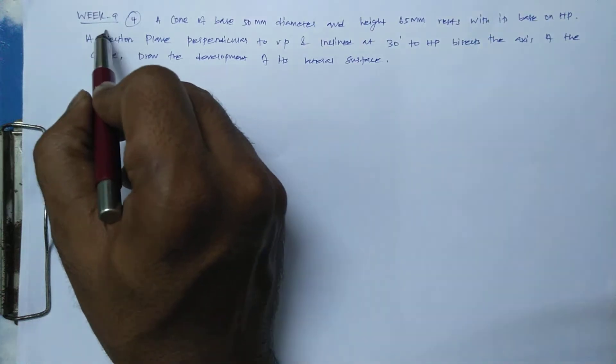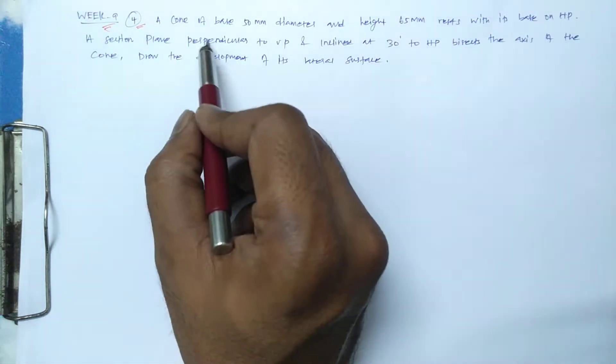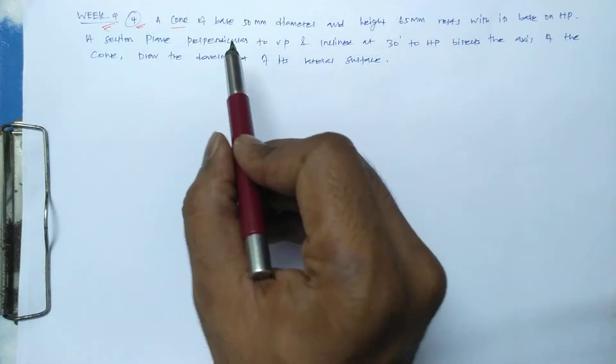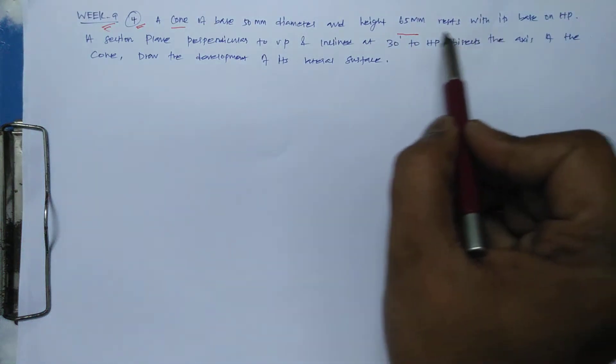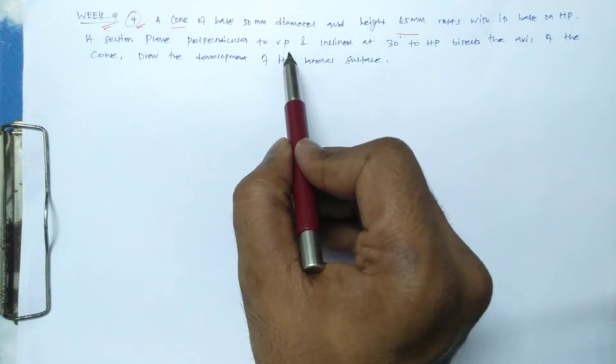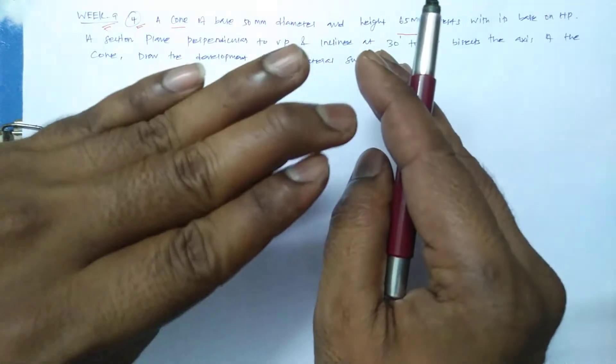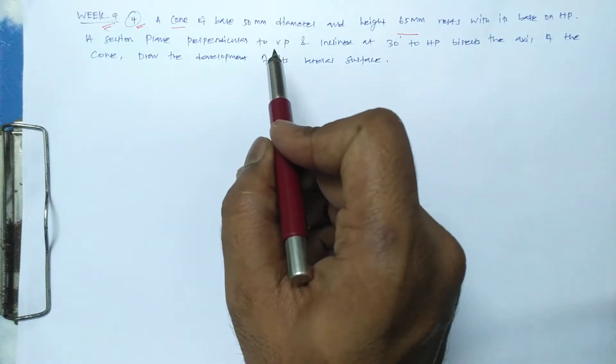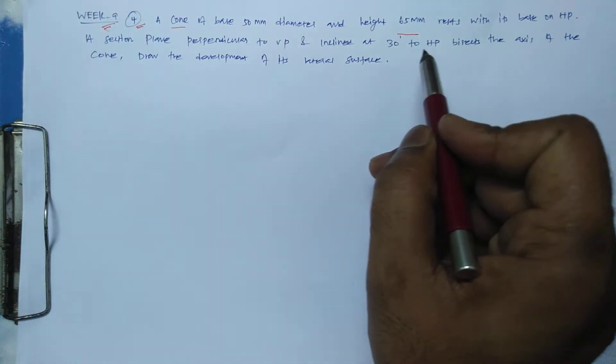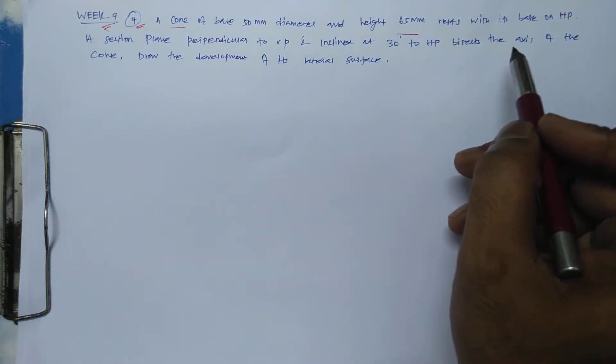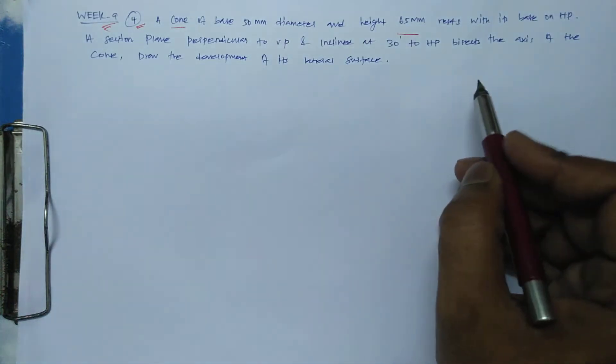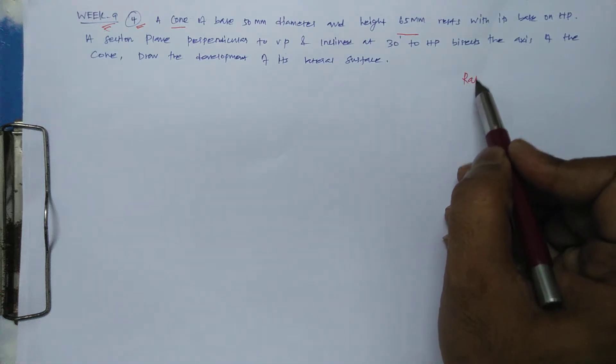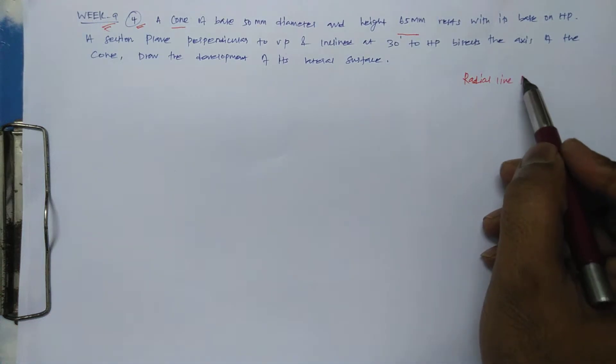Hello students, this class we see week number 9, problem number 4. A cone base 50 mm diameter and height 65 mm rests with its base on HP. A sectional plane perpendicular to VP, inclined at 30 degrees to HP, bisects the axis. Draw the development of the lateral surfaces. Since it is a cone, we'll use the radial line development method.